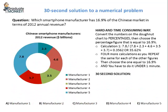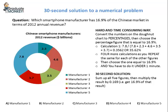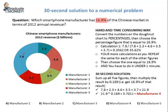Here's a 30-second solution. Sum up all five figures, then multiply the result by 16.9% of that result, so you get the revenue amount that represents 16.9% of the market. Step 1: 7.8 + 2.3 + 4.6 + 3.5 + 3.7 equals 21.9. Step 2: 21.9 times 0.169, which equals 3.70, or 3.7 when rounded to one decimal place.